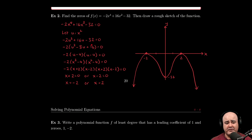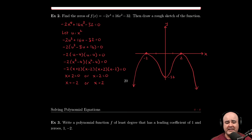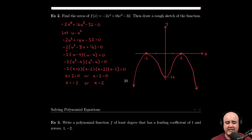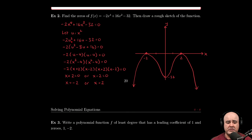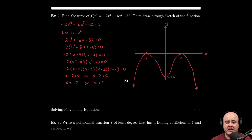We can factor out a GCF of negative two here. And as a reminder, how do we know what goes on the inside? We divide each of these terms by the GCF. So negative two u squared divided by negative two would give us u squared. 16u divided by negative two would give us negative 8u. Negative 32 divided by negative two gives us positive 16.